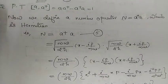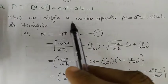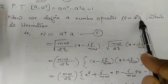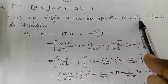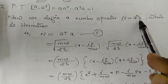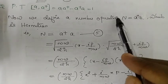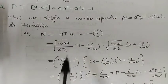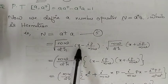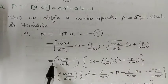In the next step we define another operator called the number operator N, which is equal to a-dagger times a. N is Hermitian. We define a-dagger as root of m omega by 2h-bar into x minus ip by m omega, and a as root of m omega by 2h-bar into x plus ip by m omega.